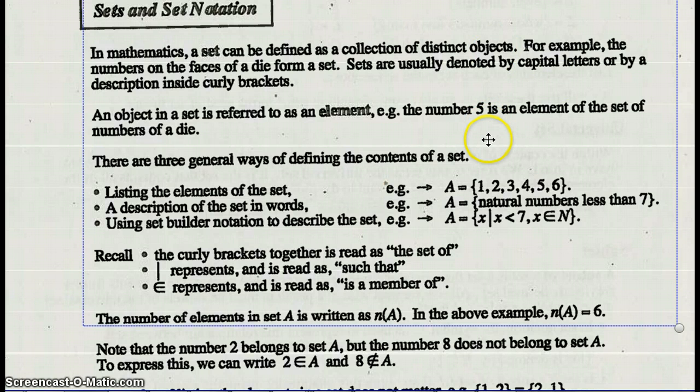Sets are usually denoted by capital letters or by a description inside curly brackets. An object in a set is referred to as an element. For example, the number 5 is an element in the set of numbers of a die. There are three general ways of defining the contents of a set: listing the elements, a description in words, or using set builder notation.